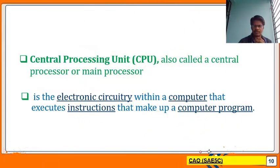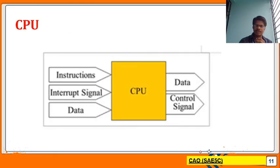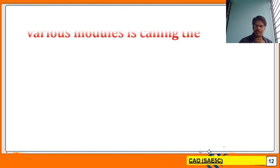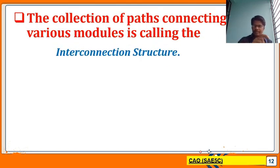The central processing unit is the main processor of any computer — it is the brain of the computer. The purpose of the CPU is to execute instructions in a computer program. The central processing unit contains many internal devices, which we will see in later videos. In order to connect these modules, we have a pathway called a bus, and those paths are collectively known as the interconnection structure.